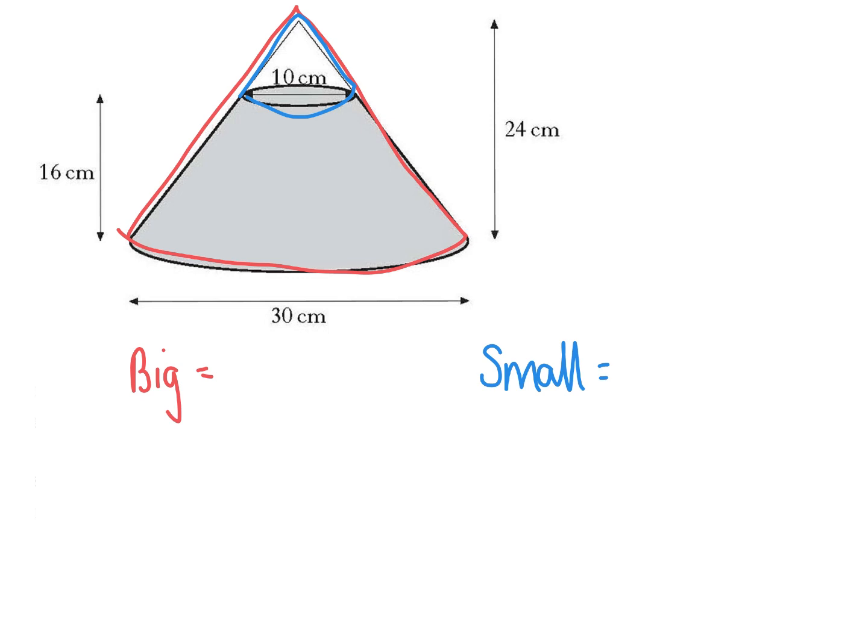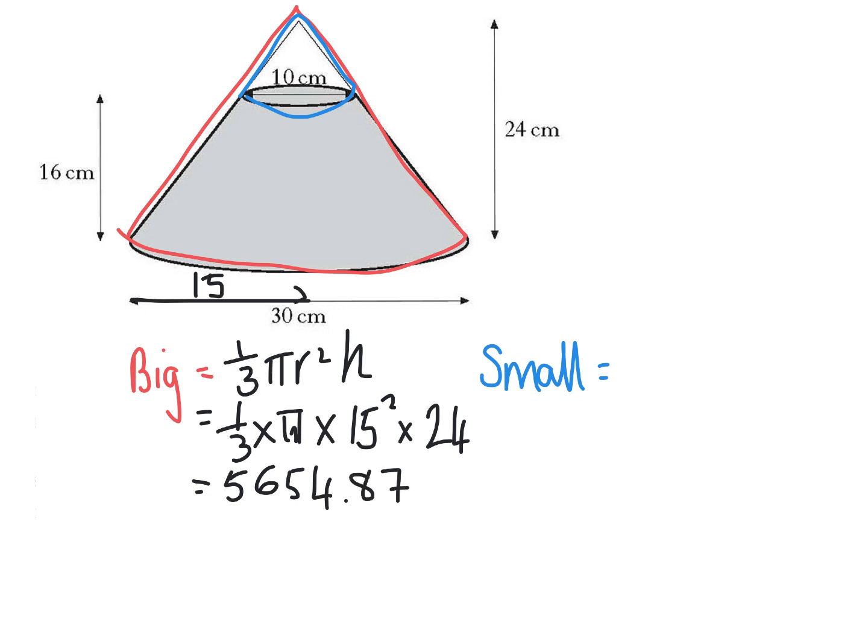So let's start with the big cone. So the big cone is one third pi r squared h because that's a formula for a cone. So I have one third times pi times... Now the radius of the big cone is half of 30, so that's 15 up to there. So it's times 15 squared times the height of 24. Which, if you type it in, gives you 5,654.87 to two decimal places. It's 866 rounding to 87.